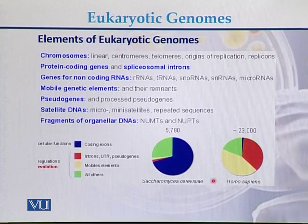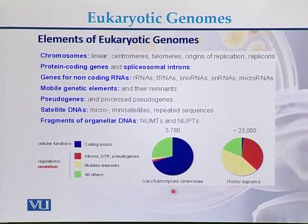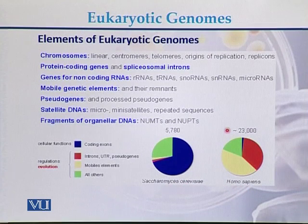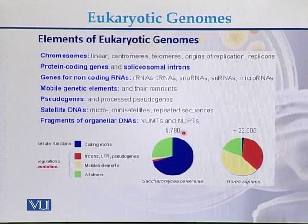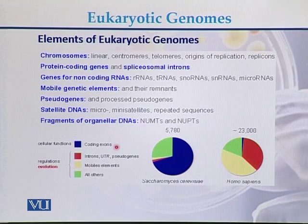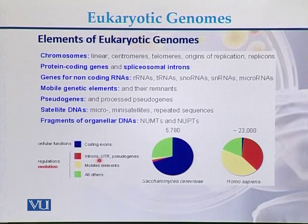Here is an example comparing two different eukaryotic genomes: one from Homo sapiens and the other from yeast. In case of Homo sapiens, there are approximately 23,000 genes, while in yeast there are approximately 6,000 genes. Looking at the percentage of coding exons, in the case of yeast, most of the genome is coding in nature, with fewer introns, mobile elements, and other non-coding regions.